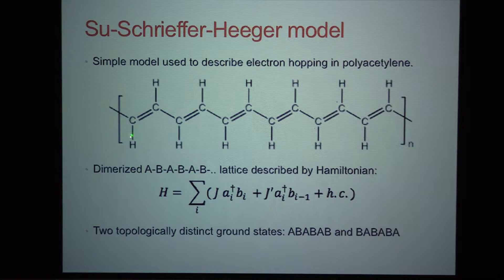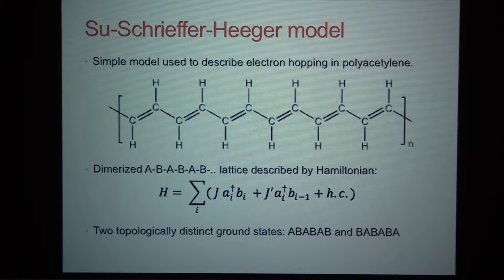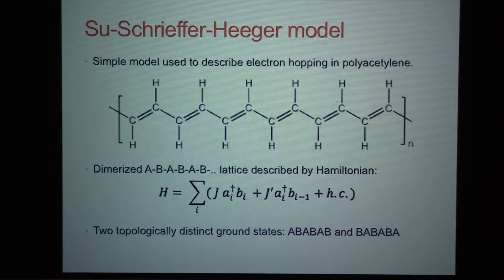With double bonds and single bonds, the electron hopping on the double bonds tunnels a little bit faster than on the single bonds because the carbon atoms are a little bit closer. If you want to write down a Hamiltonian for this, it looks like that of a dimerized lattice, where the tunneling on those bonds is different from the tunneling on the others. It has two topologically distinct ground states, corresponding to having the double bonds on these sites or on those links.